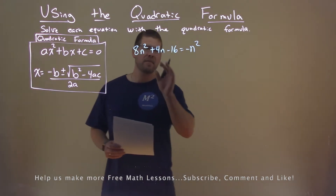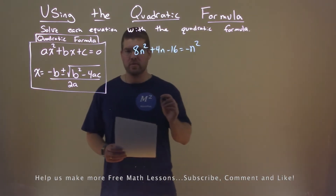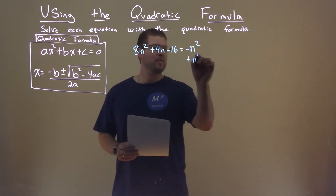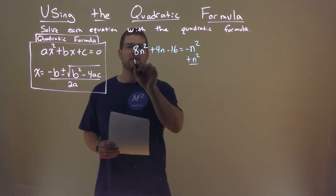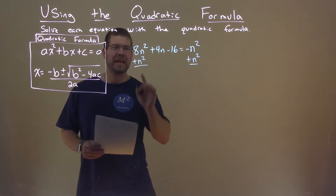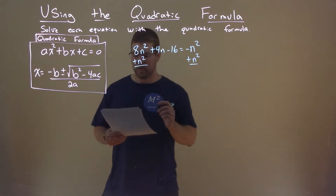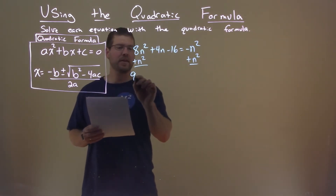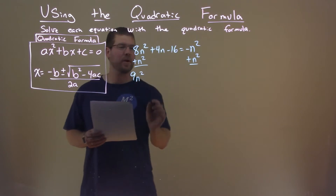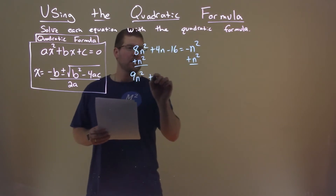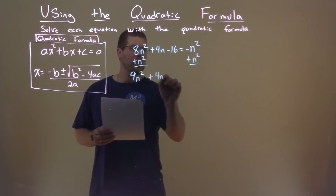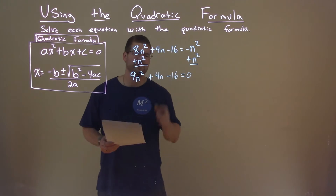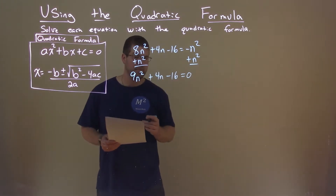I have to have my equation equal to 0, so I'm going to add n squared to both sides. 8n squared plus n squared is 9n squared. Bring down the rest: 4n minus 16, and it's equal to 0.